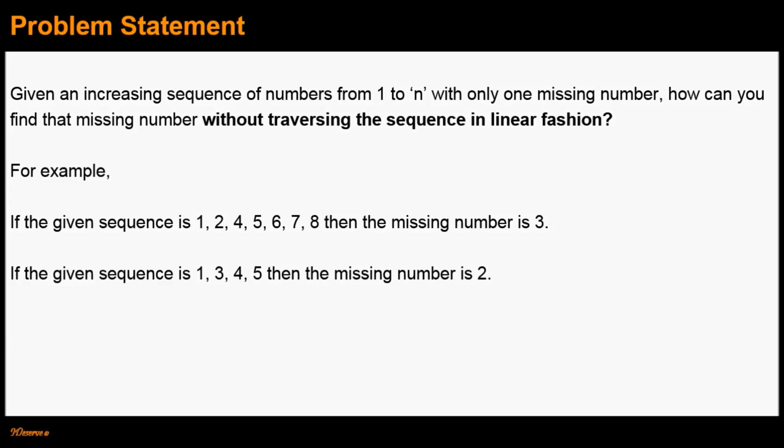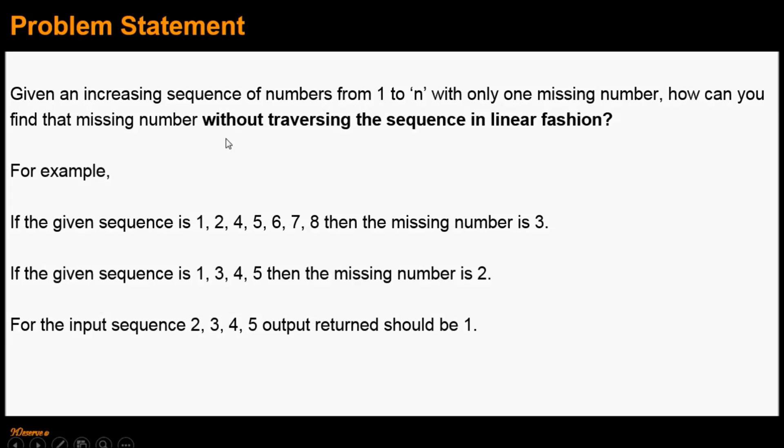Similarly, for the input sequence 1, 3, 4, 5 the missing number is 2, and for the input sequence 2, 3, 4, 5 the missing number is 1. Note that we are not allowed to traverse the given sequence in linear fashion to find out the missing number.